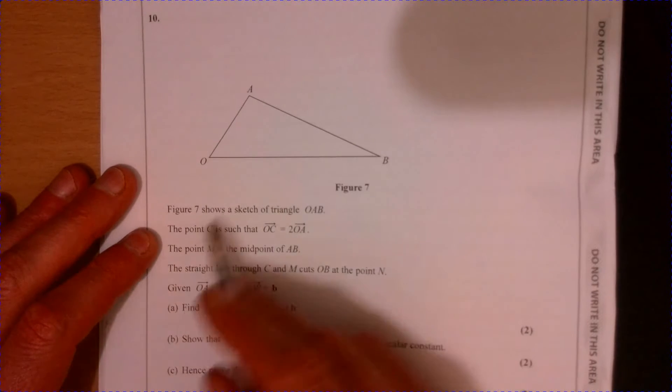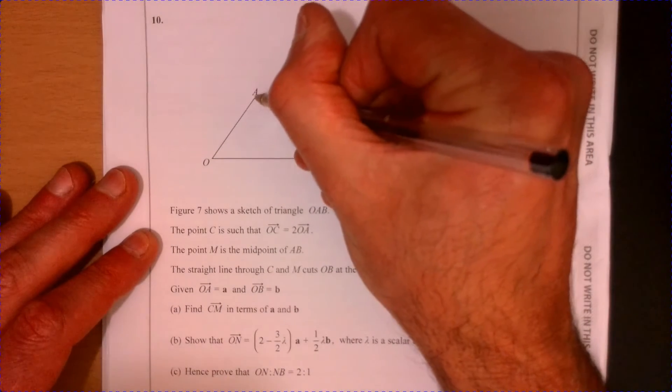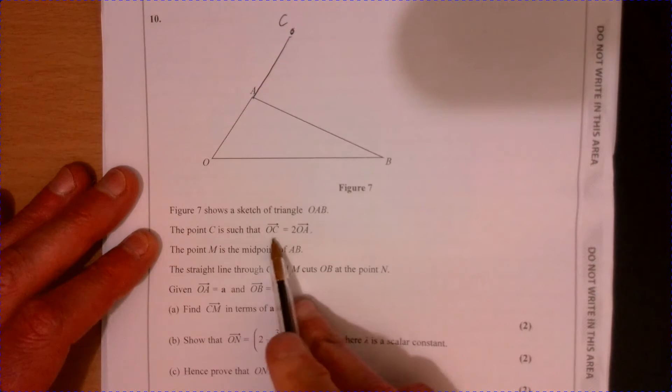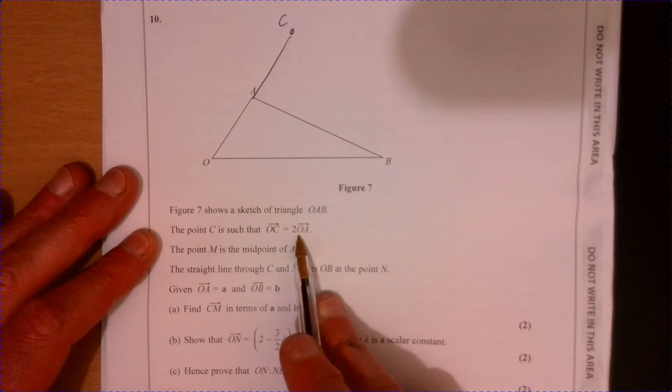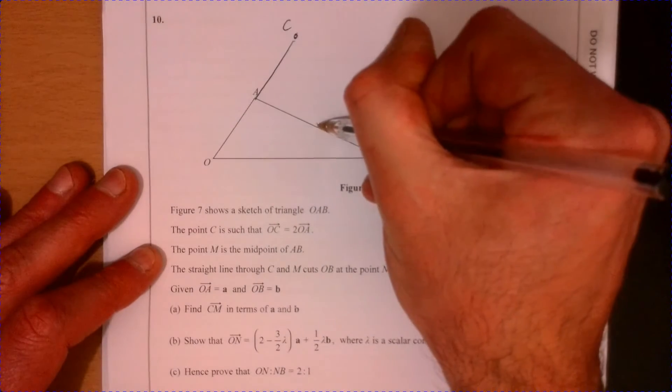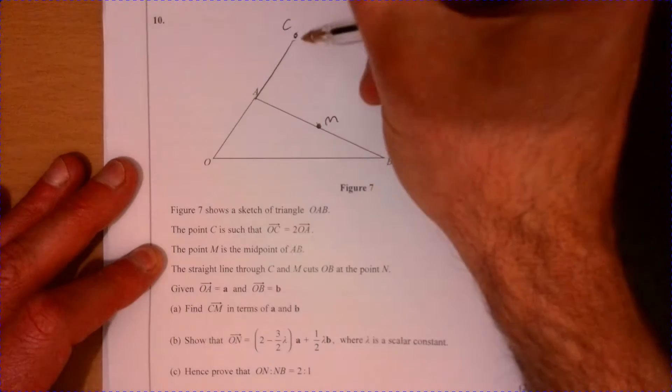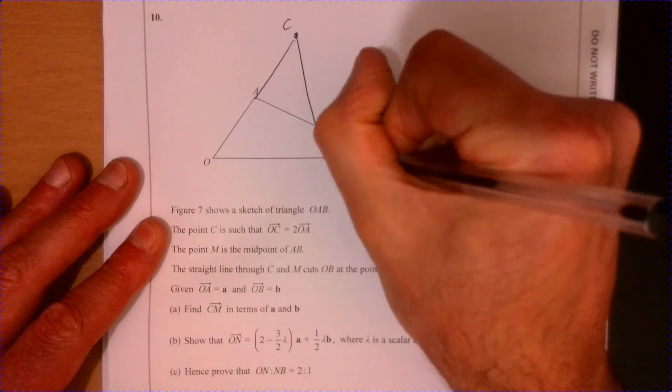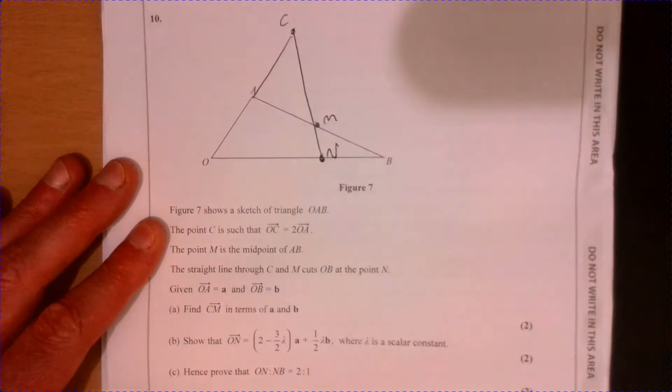Question 10. So hopefully you've had a good read of this. Let's think about where C is. C is up here somewhere because it tells me the point C is such that OC is twice OA, so it's up there. Then we're told that M is the midpoint of AB, and then we're told there's a straight line CM that carries on and hits point N down here.